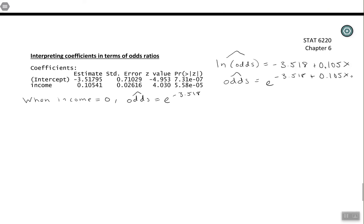Because we're plugging in 0, and the rest of this expression goes away, then we end up getting 0.0297. So this would be the predicted odds of having a travel credit card when income is equal to 0, but just like with regular regression, 0 isn't always a reasonable value. This would be extrapolation because there weren't any incomes that were close to 0 in this data set.